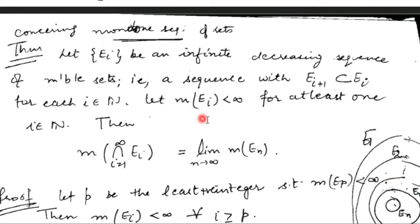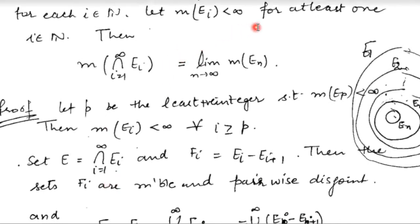Since this is a decreasing sequence, after E₃ every subsequent set also has finite measure. This condition — that at least one set has finite measure — is very important. The result states that the measure of the intersection of this infinite decreasing sequence equals the limit as n approaches infinity of the measure of Eₙ. We assume p is the least positive integer such that the measure of Eₚ is finite.